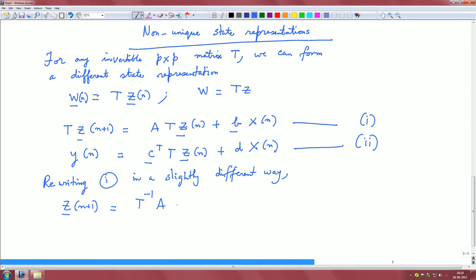Therefore, it is T inverse times A times T z(n) plus b x(n). And y(n) remains the same. There is a T inverse here, which is basically T inverse times b x(n), and I will call this equation 3.